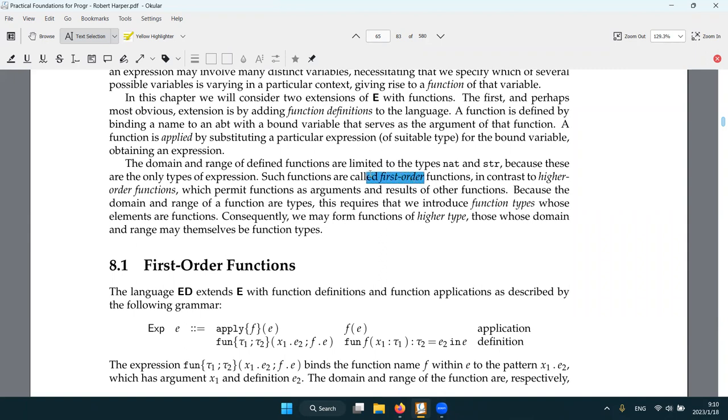The function we add is called first order functions because we can't do like high order stuff, we can't pass functions as arguments or we can't return another function from a function. So basically functions are not values in this language. Then later we will talk about higher order function, which is function become values so we can pass them we can return them.